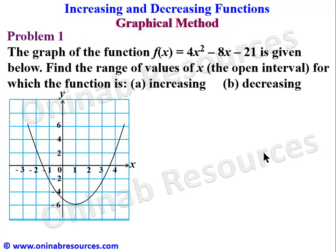Starting with problem one: the graph of the function f(x) = 4x² - 8x - 21 is given below. Find the range of values of x — that is, the open interval — for which the function is: (a) increasing, (b) decreasing. From the definition of increasing and decreasing functions, we have to identify the turning point first.